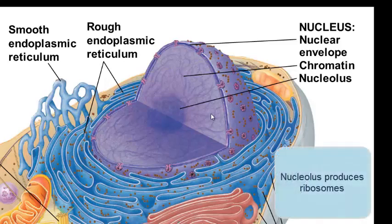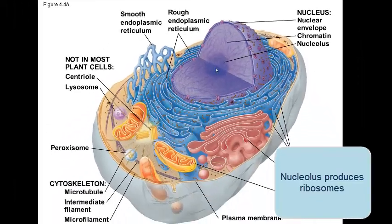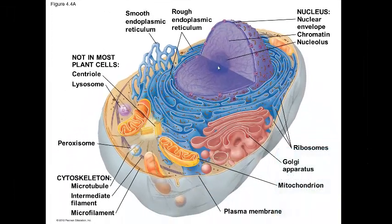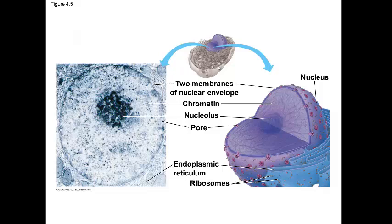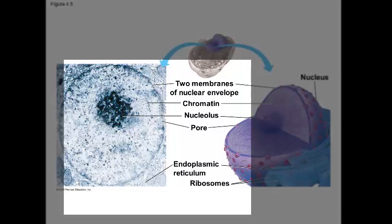The nucleolus is this darker dense area within the nucleus, and this dense region is the site for making ribosomes. The way the nucleus controls cell activities is to synthesize proteins. The electron micrograph of this particular nucleus shows us the nucleolus, then we can see the chromatin, and then we can see this boundary as well.